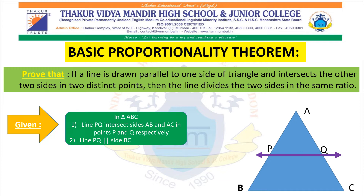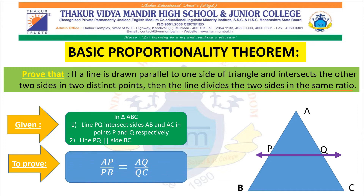The second given is PQ is parallel to side BC. As you know, everything before 'then' in the statement is your given, and everything after 'then' is your to prove. So what we need to prove is that line PQ divides sides AB and AC in the same ratio: AP/PB = AQ/QC. That is our to prove.